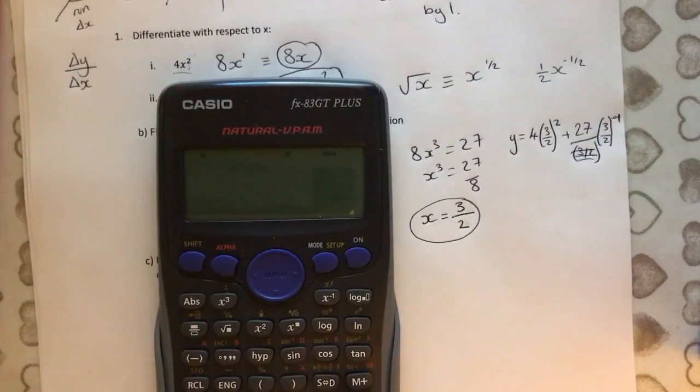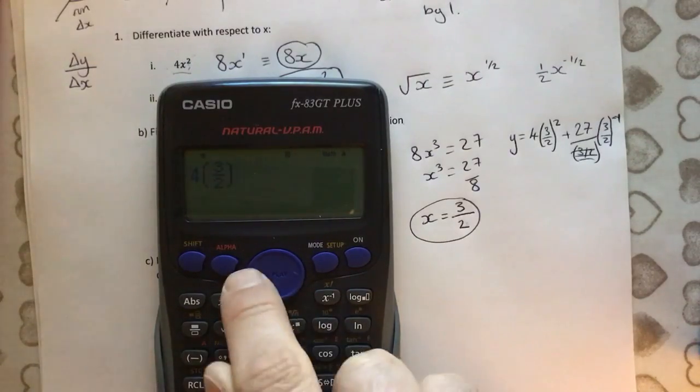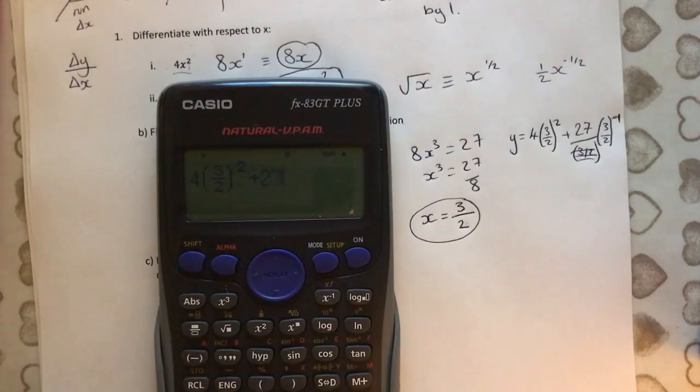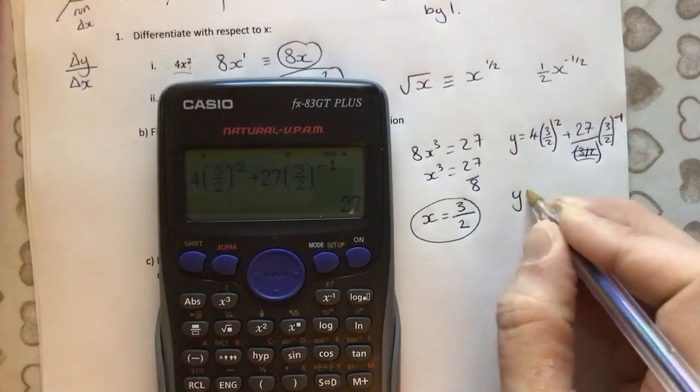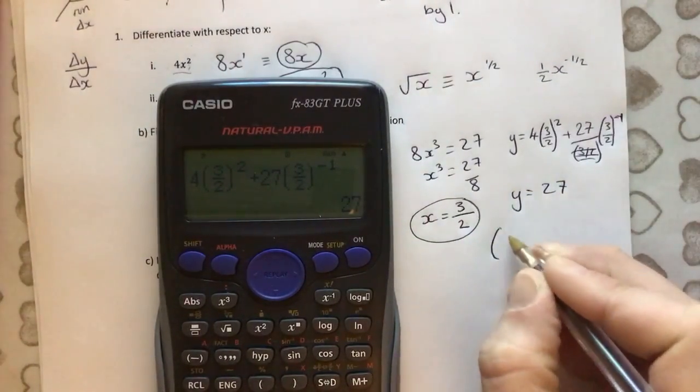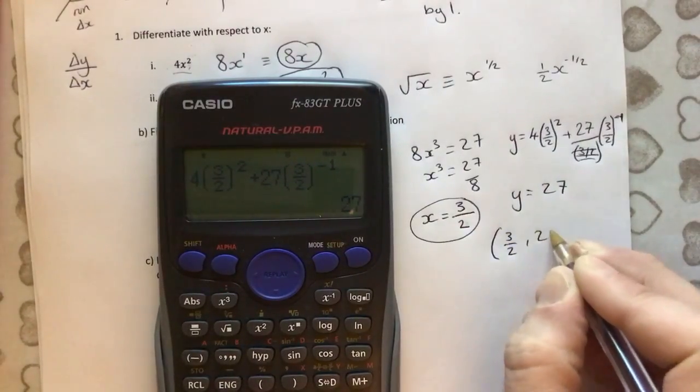So, I don't know how well you can see the screen there, but let's type that in. 3 over 2 squared plus 27 bracket fraction. 3 over 2, close the bracket to the power of minus 1. And it thinks about it, and the answer is 27. And so the coordinate, we may as well write it as a coordinate, is 3 over 2 and 27.